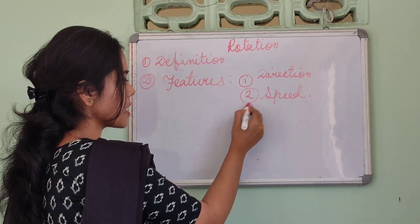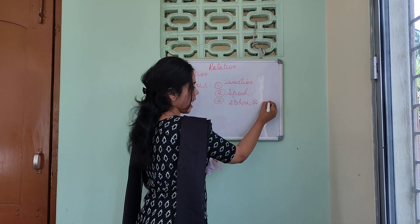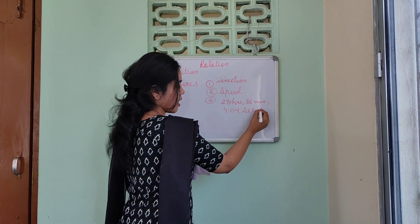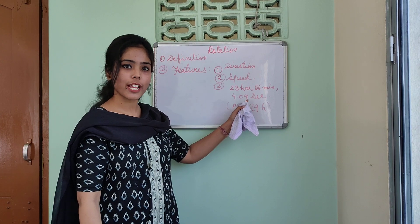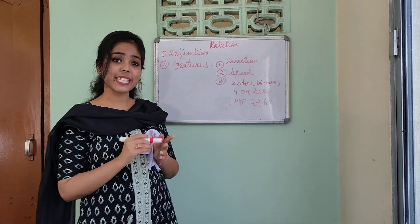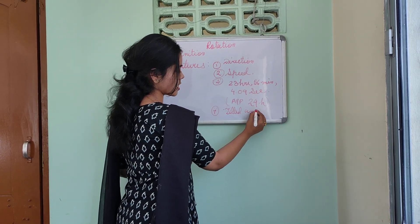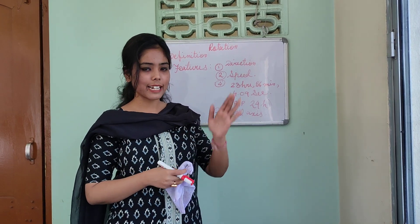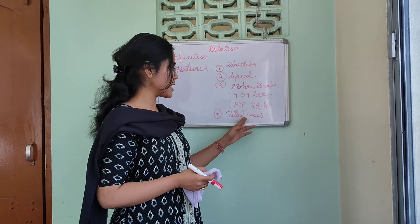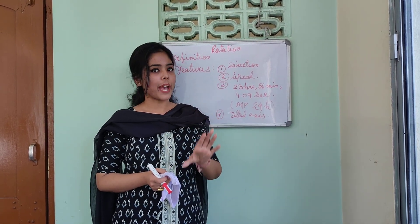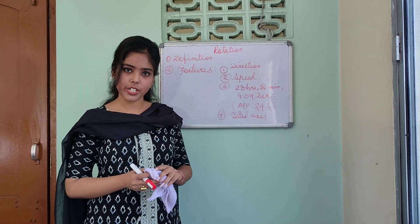The third feature is time. It takes 23 hours, 56 minutes, and 4.09 seconds to rotate — approximately 24 hours. Another feature is the tilted axis of Earth's surface. It is basically an imaginary line; on the surface of Earth we can't see it. It is tilted 23.5 degrees from the vertical line and 66.5 degrees from the horizontal line.